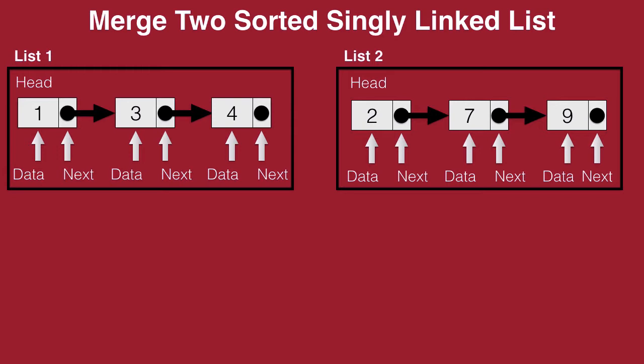Now when we merge these two lists, this is how we want our final output to look like. We have a final list which is a result of both these lists and the result is in sorted order as well. You could pause this video here, try giving an attempt at arriving at the logic yourself and then come back to this video.